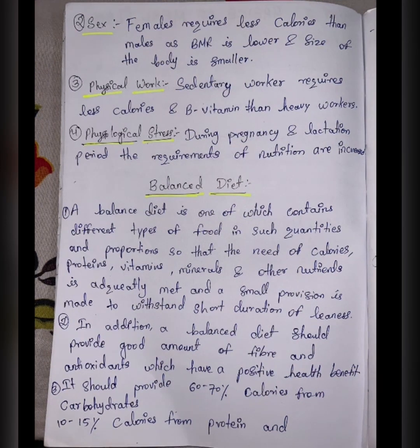A balanced diet should provide a good amount of fiber and antioxidants, which have positive health benefits. It should provide 60–70% calories from carbohydrates, 10–15% calories from protein, and 20–25% calories from fat.